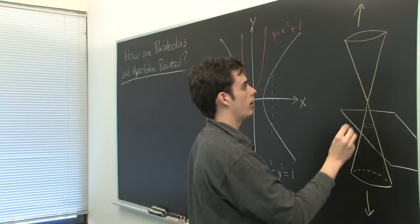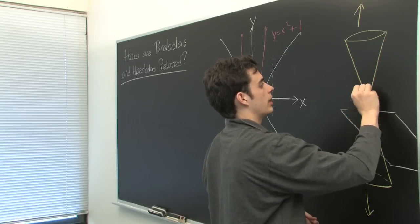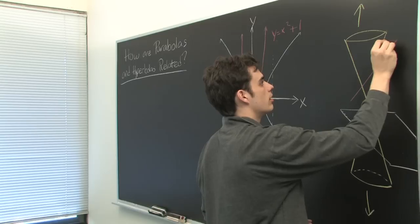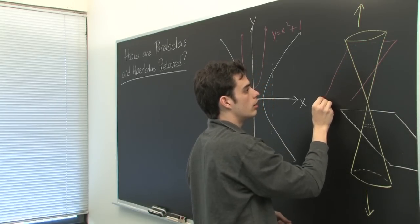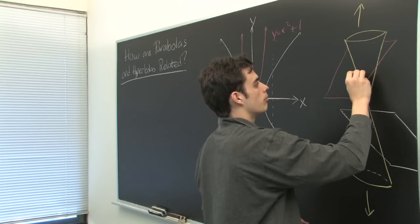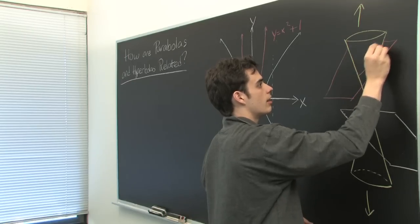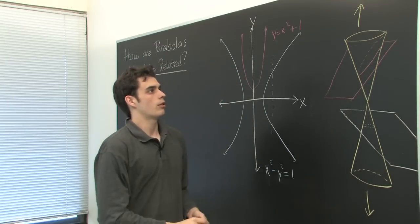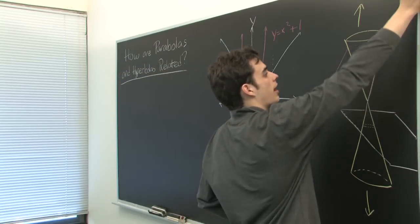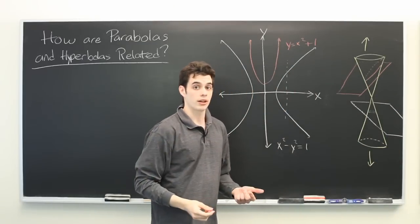So for example, a plane something like this might intersect the cone there. This will extend outwards towards infinity, giving us a parabola.